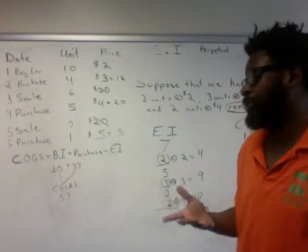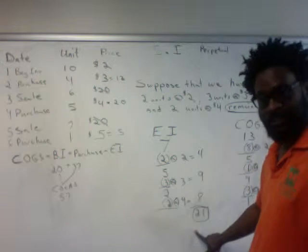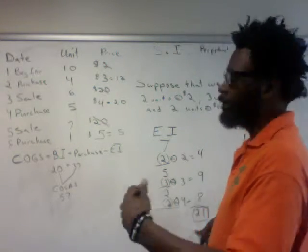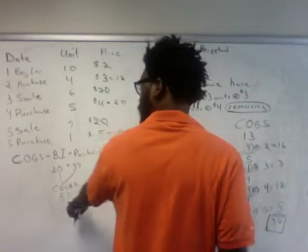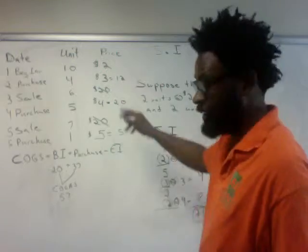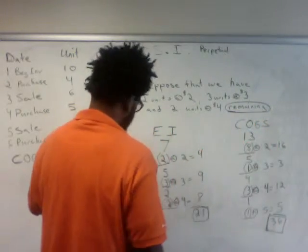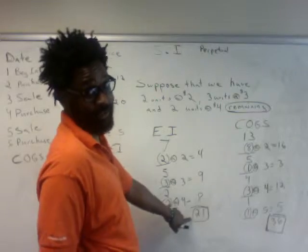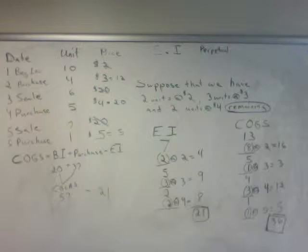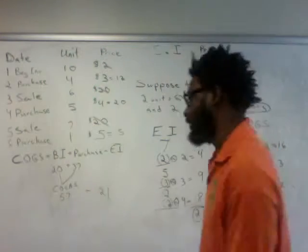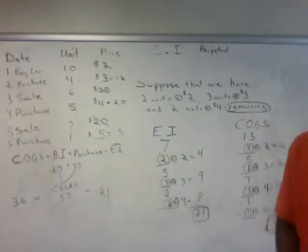As a shortcut: if you've already calculated ending inventory for specific identification and need cost of goods sold, just use the $57 total. Plug in the ending inventory of $21, subtract from $57, and you get $36 for cost of goods sold.